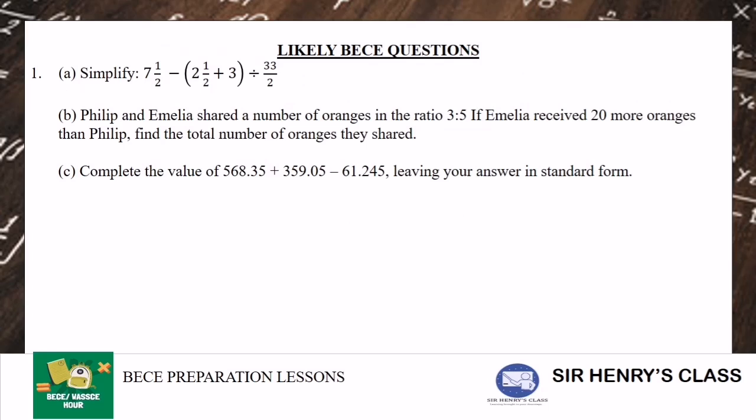So we have number 1A. Simplify 7 1/2 minus bracket 2 1/2 plus 3 dividing 33/2. So we will solve B. Philip and Emilia share a number of oranges in the ratio 3 to 5. If Emilia received 20 more oranges than Philip, find the total oranges they shared.